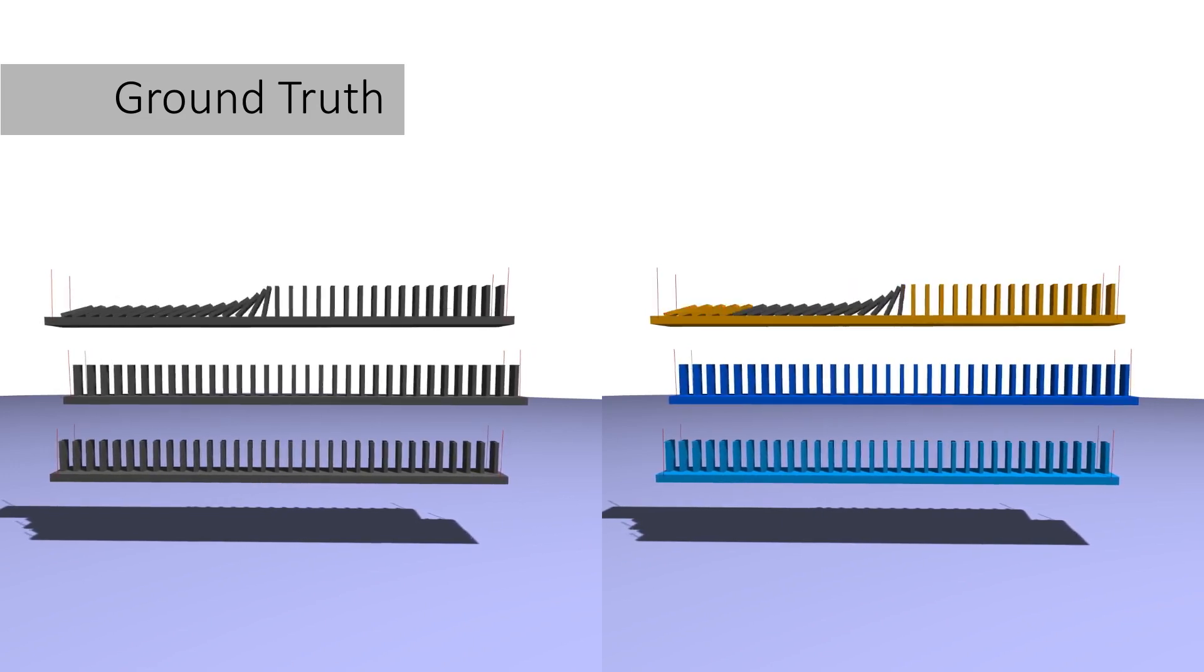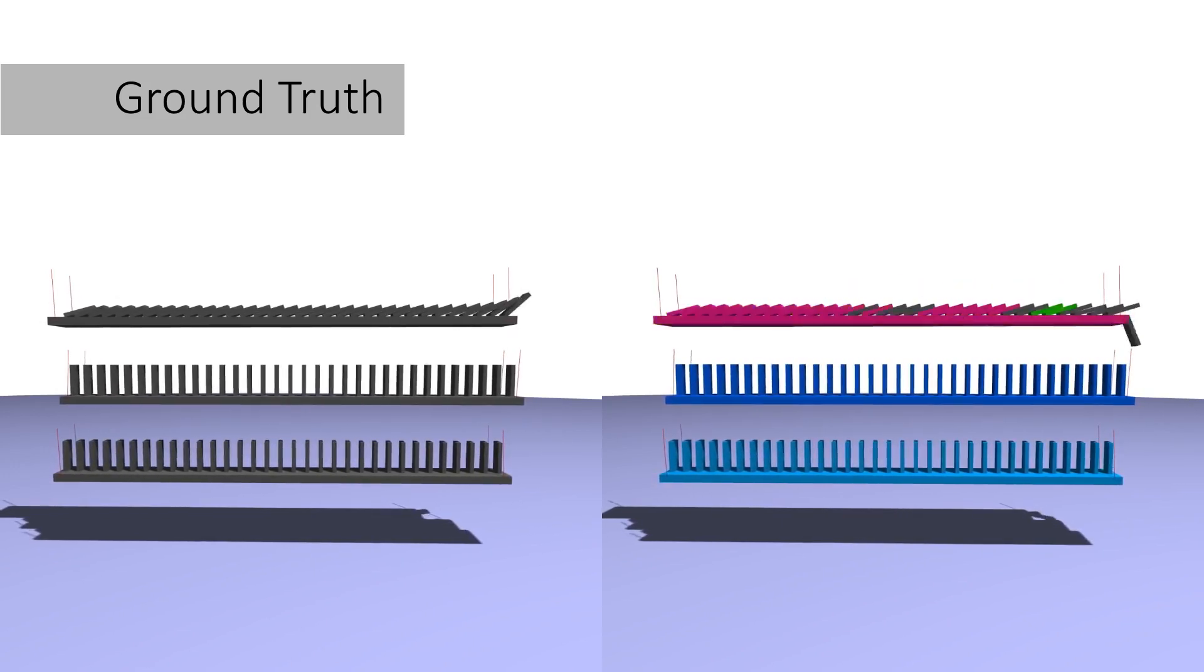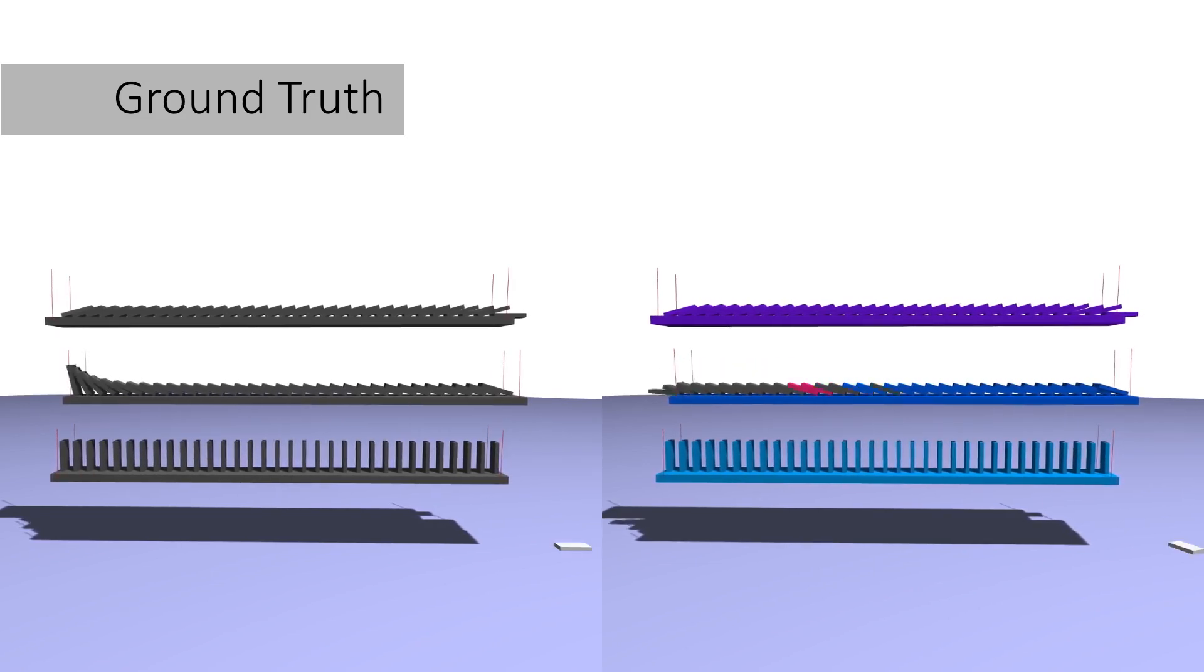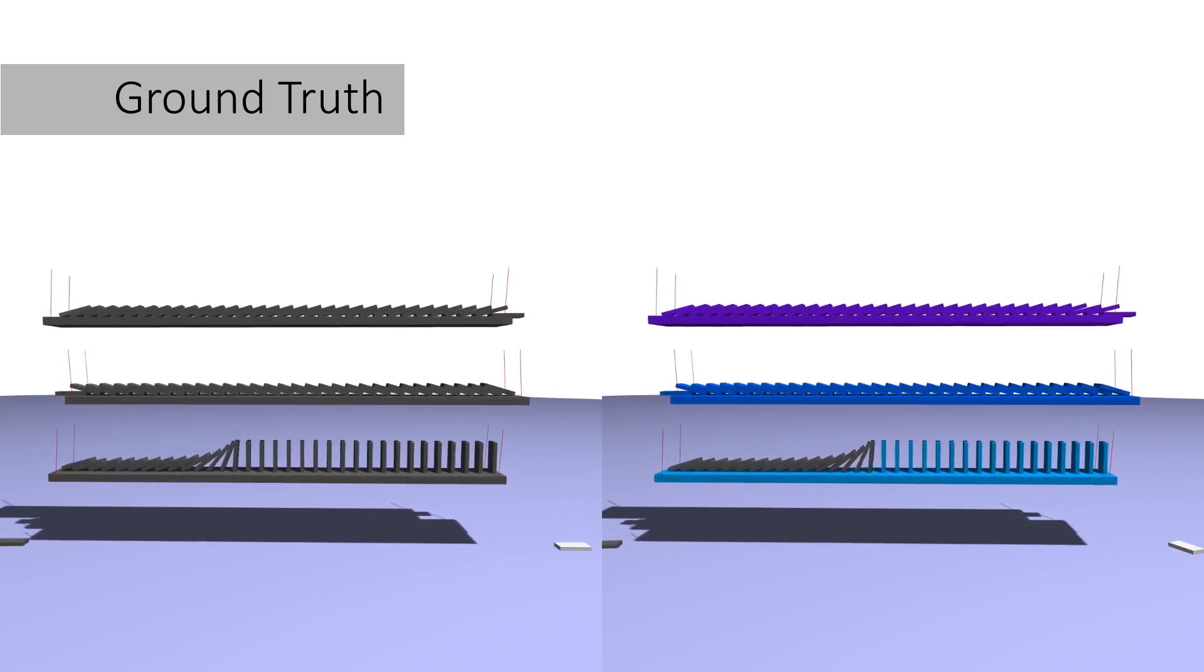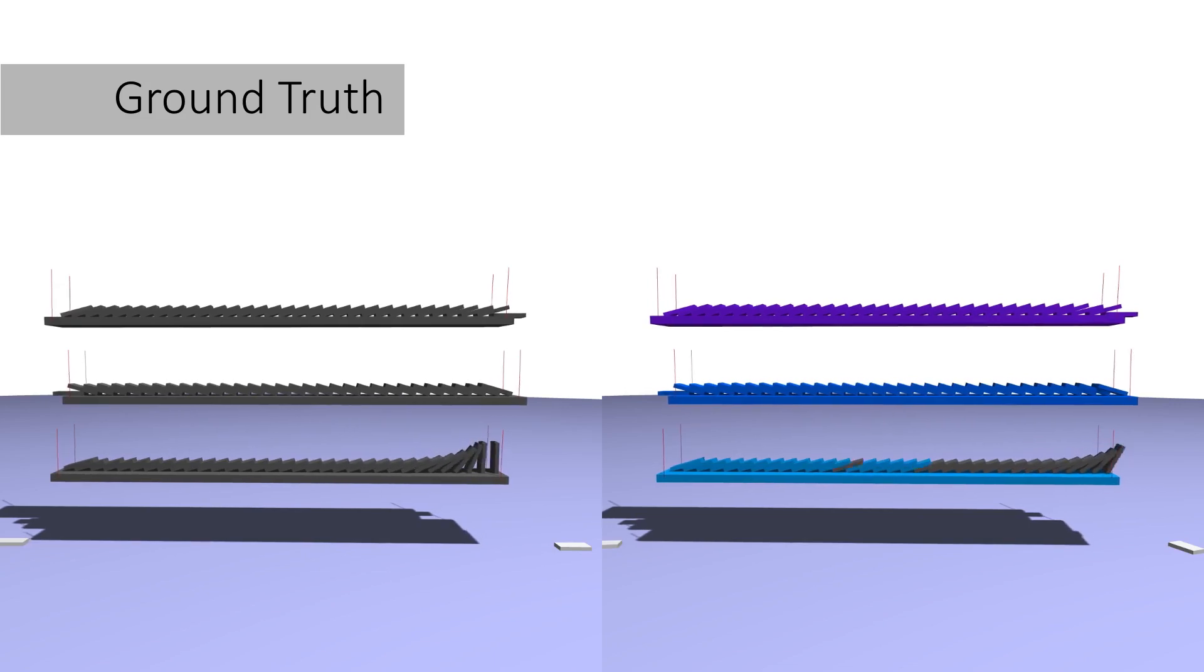Bodies unmerge and are able to move at just the right time because we identify unmerging events before the full LCP computation at each time step. In this long chain of colliding dominoes, notice how the timing closely matches the ground truth.